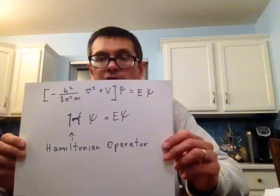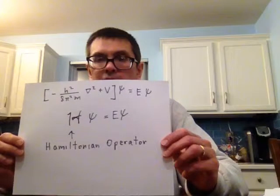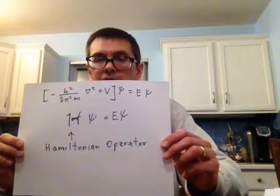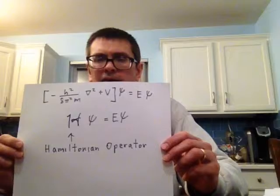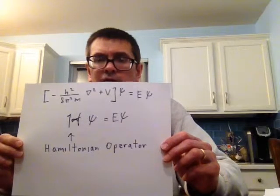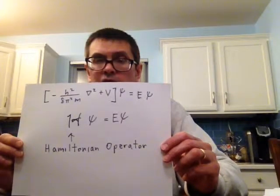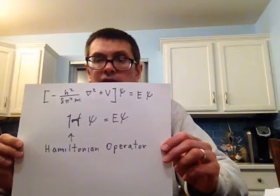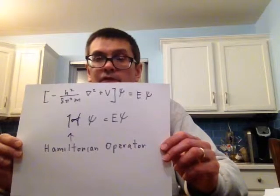Now what happens is you have this operator on the waveform and you can shorthand it as a wavy H, or I think they use a capital H. I forget even what that's called—some Greek letter. Anyway, it's also called the Hamiltonian operator. So you can relate Schrodinger's equation to energy.